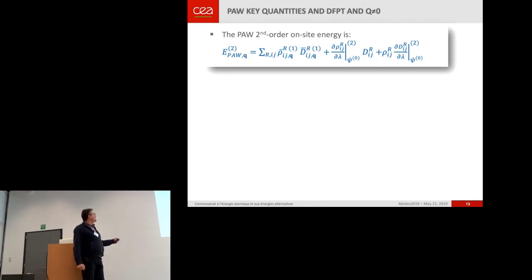The contribution of the on-site terms to the second-order energy is not so complicated to obtain. You have to derive RORIJ, DIJ, or one of these two, but only at constant wave functions. This is for experts.